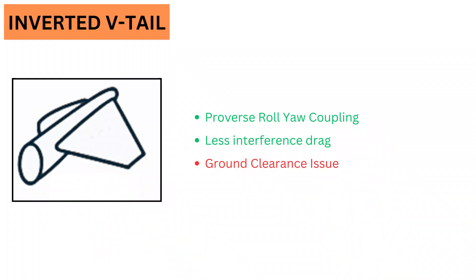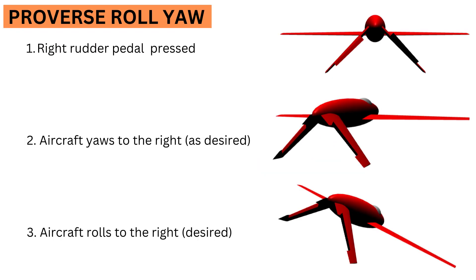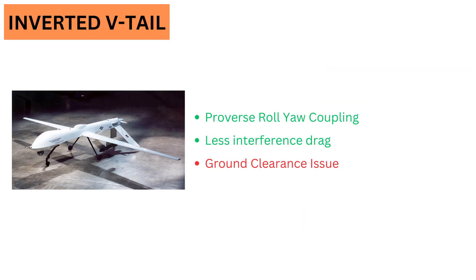Inverted V-tail: This type avoids the adverse roll-yaw coupling problem of the V-tail type. The airplane rolls in the direction of the turn, and this is called proverse roll-yaw coupling. A disadvantage of this type is that it can be difficult to provide enough ground clearance, which can lead to tail strike issues.